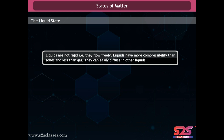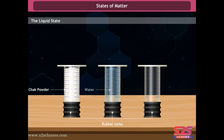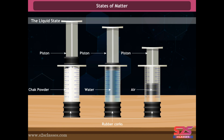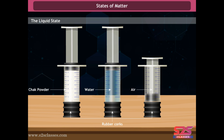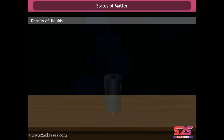Take three syringes, remove their pistons, and close the nozzles with rubber corks. Fill one syringe with chalk pieces, another with water, and the third with air. Insert the pistons back and push them. The pistons of the syringes containing chalk pieces and water require a large amount of force, while the piston of the syringe with air is comparatively easier to push. From this activity we conclude that liquids are more compressible than solids and less compressible than gases.